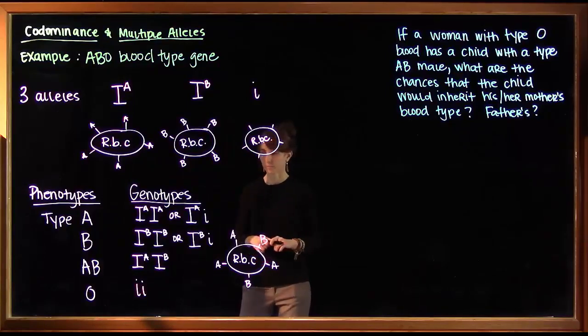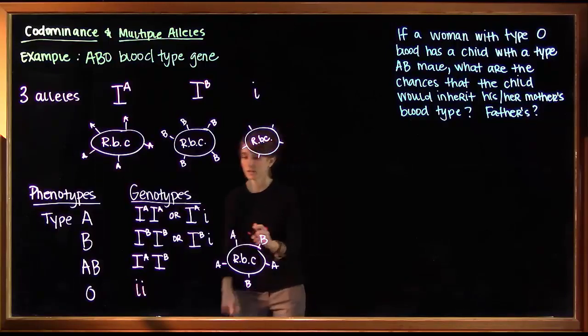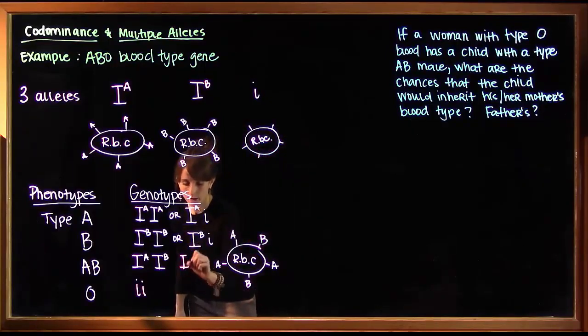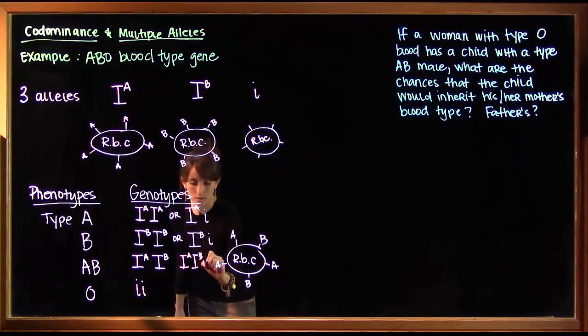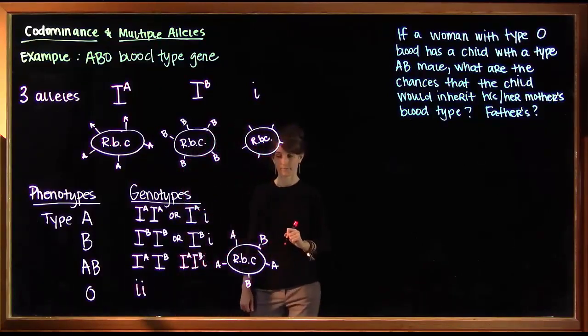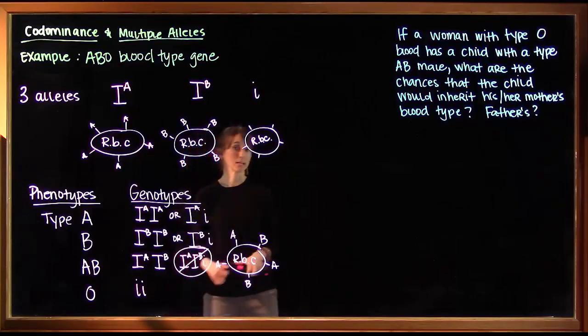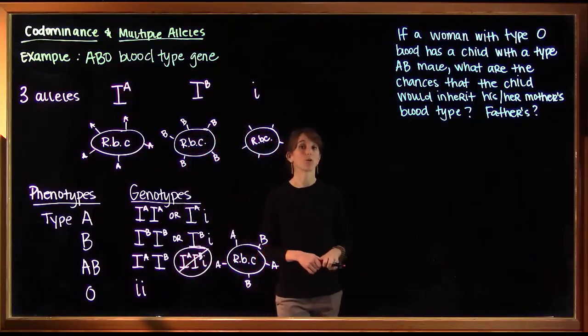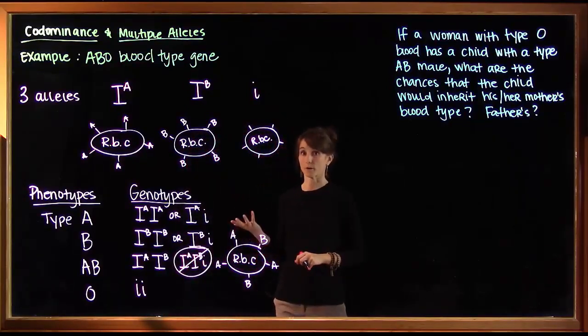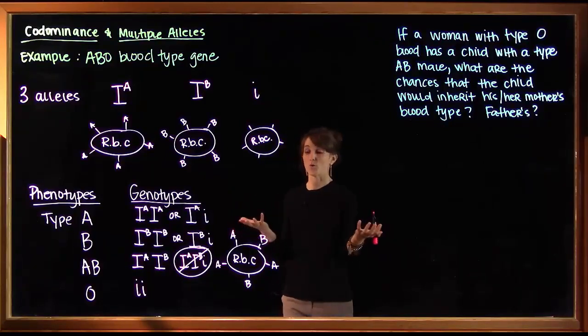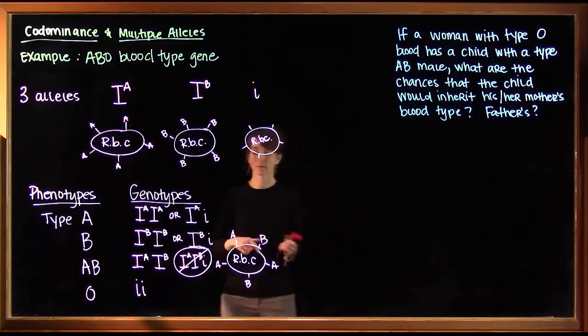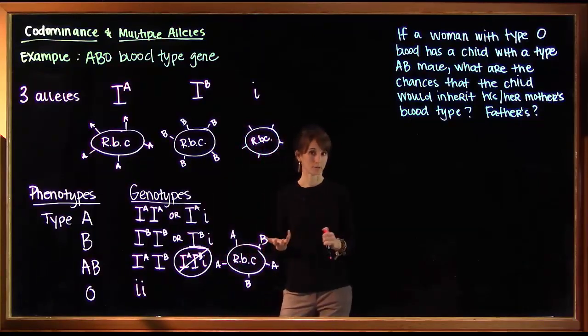Before we move on, think about this. Is it possible for a person with type AB blood to have I, A, I, B with a little i? And the answer is no it's not. Because even though there are three alleles in the gene pool, each person can only have two at a time. They got one from their mom and one from their dad. So you can only have two at a time, which means having three alleles is not possible, assuming that everything in meiosis went the way it should have gone.